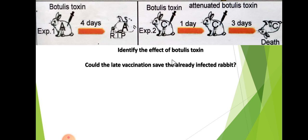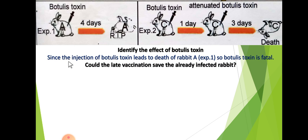The first question is: identify the effect of bottlis toxin. The bottlis toxin is fatal. Why? Because the injection of bottlis toxin leads to death in Rabbit A in Experiment 1. So bottlis toxin is fatal.